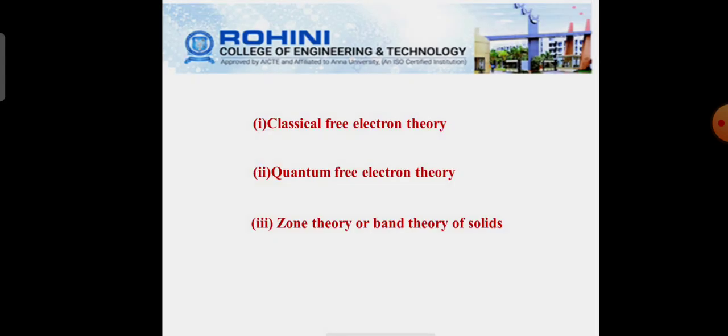There are three types of electron theory. First one is classical free electron theory. Next is quantum free electron theory. Third one is zone theory or band theory of solids.